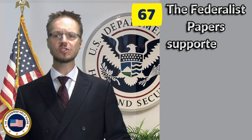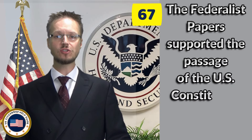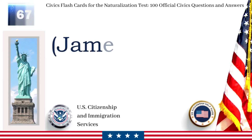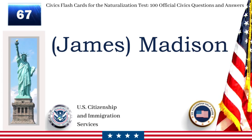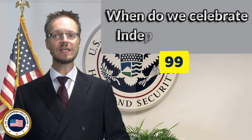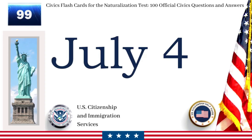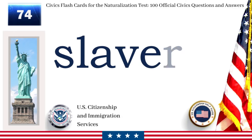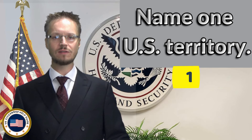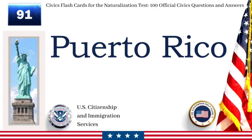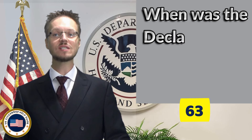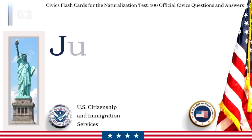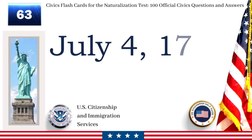The Federalist Papers supported the passage of the U.S. Constitution. Name one of the writers. James Madison. When do we celebrate Independence Day? Name one problem that led to the Civil War. Slavery. Name one U.S. territory. Puerto Rico. When was the Declaration of Independence adopted? July 4, 1776.